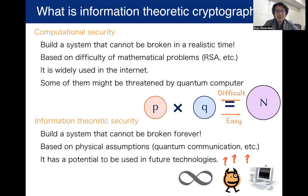So what is information theoretic cryptography? Roughly speaking, modern cryptography can be categorized into two categories based on security. The first category is computational security, and the second category is information theoretic security. In computational security, we try to build a system that cannot be broken in a realistic time, and usually it is based on the difficulty of some mathematical problems.